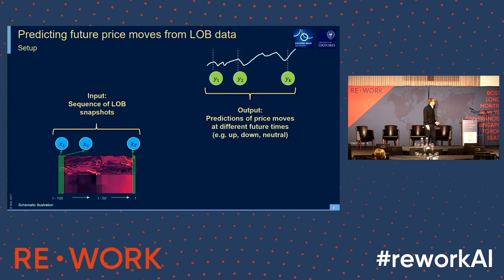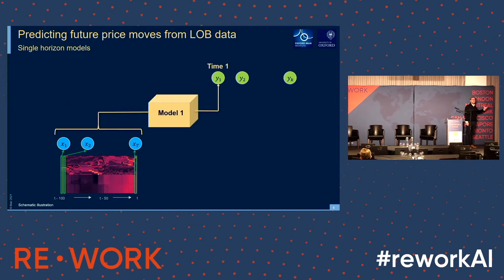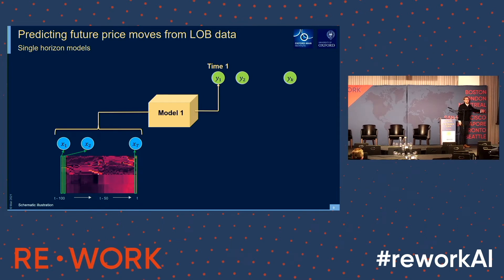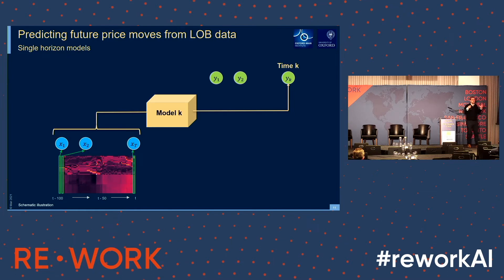So we have this input data — those 100 sequences of limit order books — and now I want to make predictions about where the price is going. But I can ask: what time into the future? 10 ticks? 20 ticks? 50 ticks? 100 ticks? I can do it at multiple horizons. In a standard supervised learning setup, I would have to train one model for each horizon. That's not very efficient, and also conceptually: if I'm good at predicting moves in the short term, I should be able to extrapolate and get better predictions in the long run. But if I have separate models, I can't really utilize those insights.